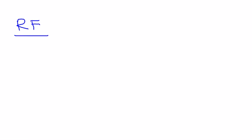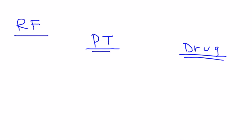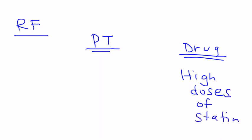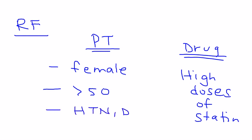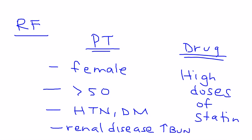A lot of patients are placed on statins, but only a small percentage actually develop myopathy. There are two categories of risk factors: patient-related and drug-related. The drug-related one is easy — high doses of statins are associated with higher likelihood of developing myopathy. Patient-specific risk factors include female sex, age above 50, comorbid conditions such as diabetes or hypertension, and renal disease. If a patient has renal disease, you would likely see elevated BUN and creatinine in their clinical presentation.